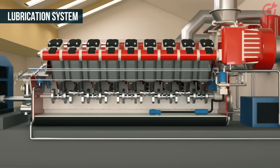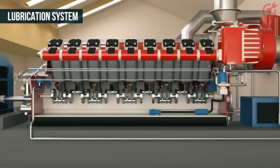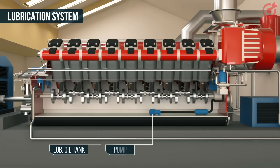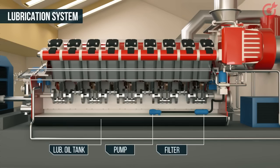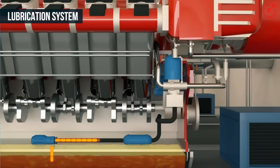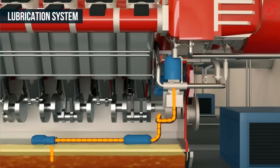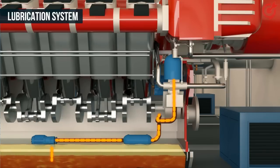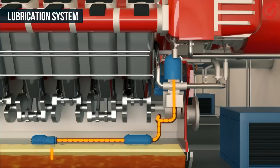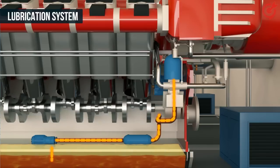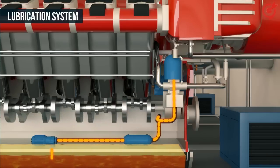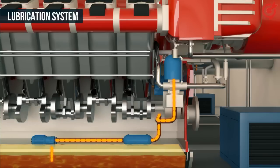The lubrication system consists of a lubricating oil tank, pump, filter, and oil cooler. Lubricating oil is drawn from the oil tank by the pump and passed through filters to remove impurities. Oil coolers are also present to keep the temperature of the oil as low as possible.